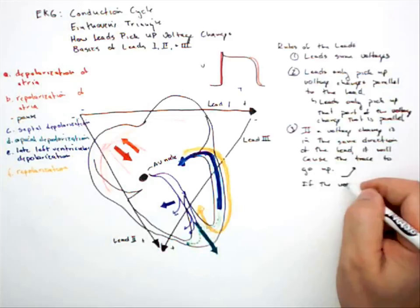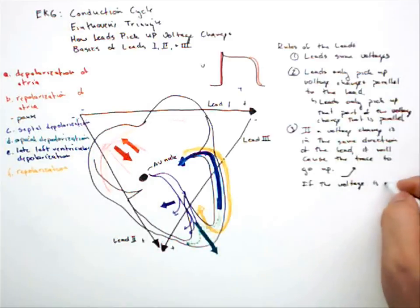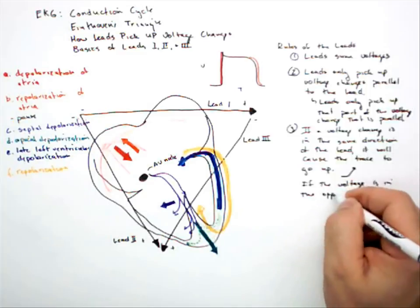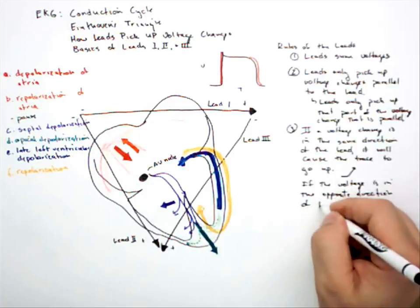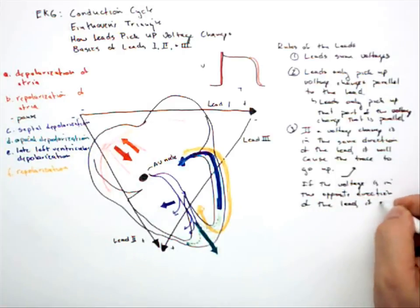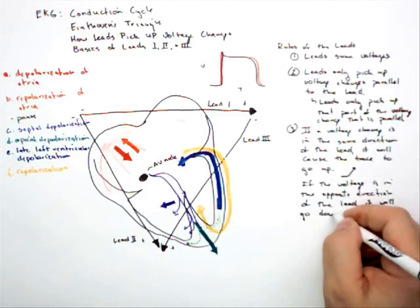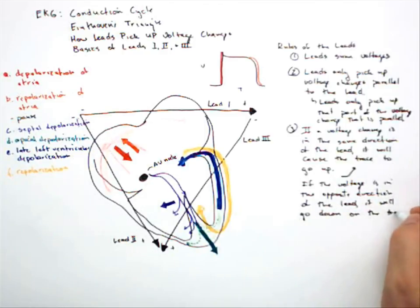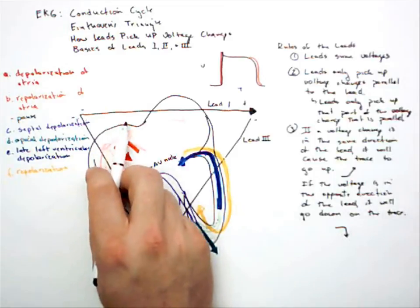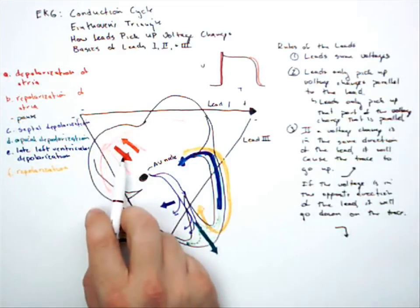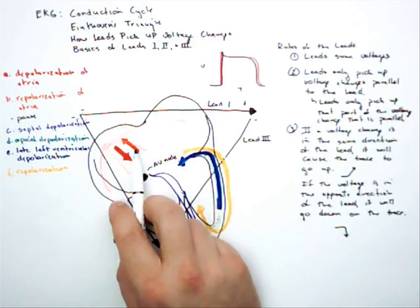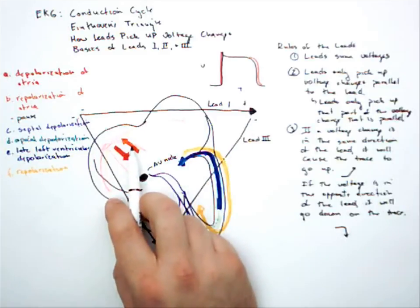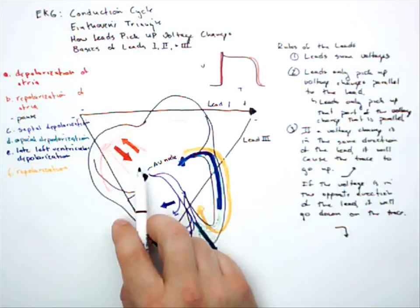If the voltage change is in the opposite direction of the lead, it will go down on the trace. That's how you get upward deflections and downward deflections. So if the voltage change is with the lead, for example, this depolarization is pointed in the same direction as this lead. So this would go up on the EKG trace. This arrow is pointing in the opposite direction of our lead. So this would cause the trace to go down on our EKG paper or screen.